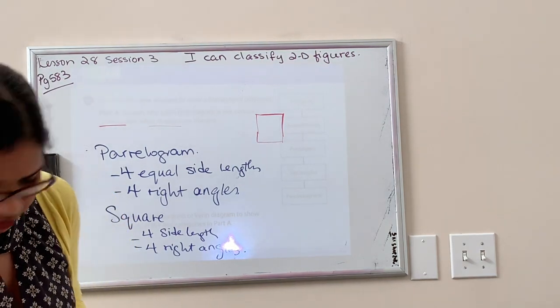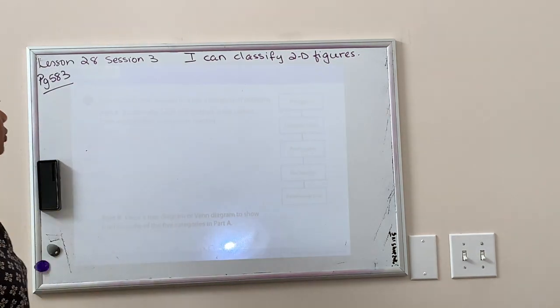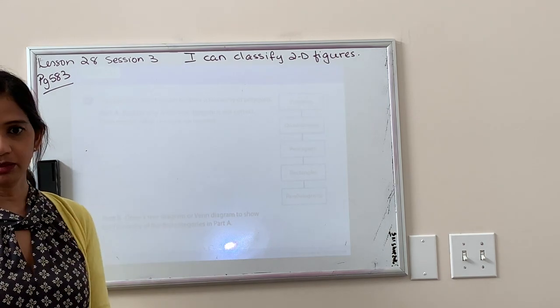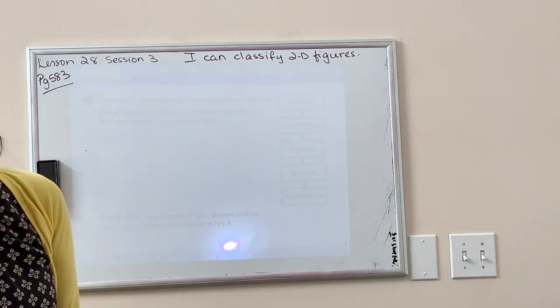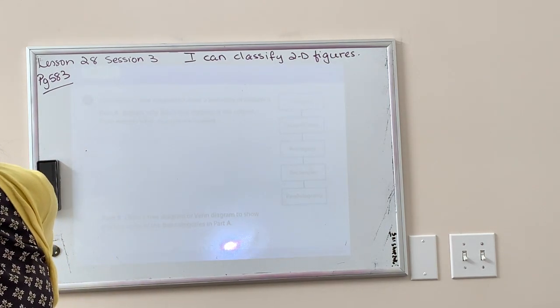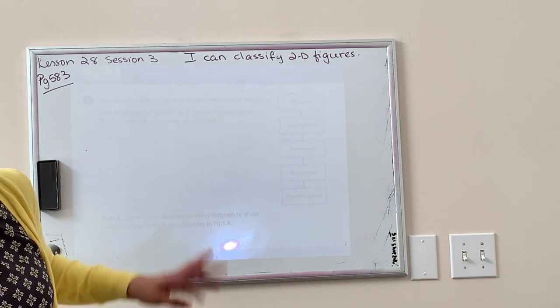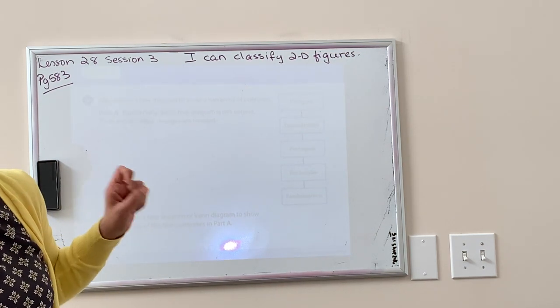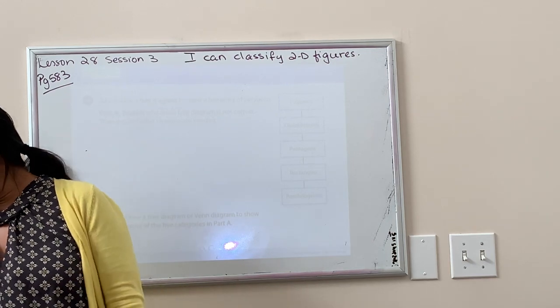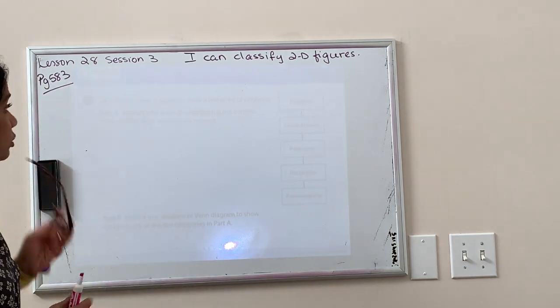So we are at number four. And number four says, Jake makes a tree diagram to show a hierarchy of polygons. Explain why his tree diagram is not correct and then explain what changes need to be made. So he starts off with polygons and then he goes to quadrilaterals, which is fine.